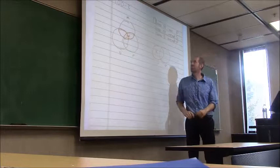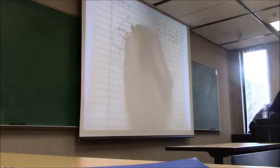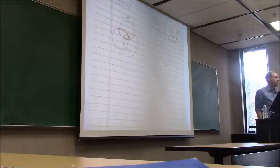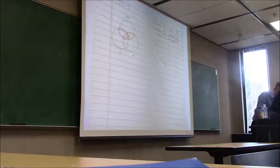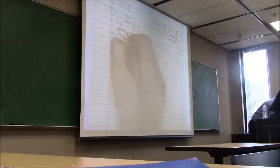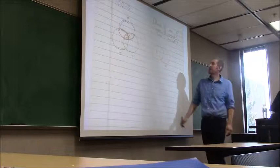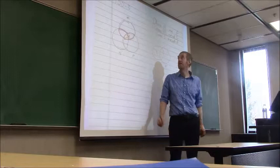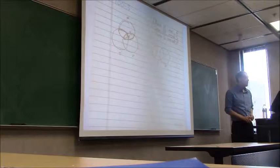Now for the minor premise: 'Some M are not S.' I'm looking at M and S. Shading or putting an X? X, because it's particular. Top moon (M but not S), cat's eye, or bottom moon (S but not M)? Top moon — because it's got to be in M, so it can't be the bottom moon, and it's not in S, so it can't be the overlap. I put it somewhere in the top moon region, on the line of P — the unmentioned circle.